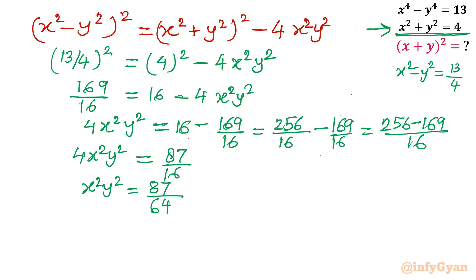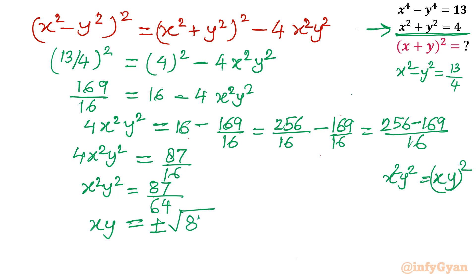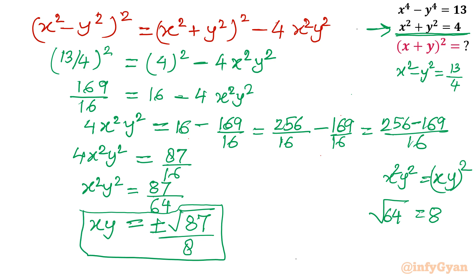Taking square root of both sides — since x²y² can be written as (xy)² — we get xy equals plus or minus square root of 87 over 8, because the square root of 64 is 8. This is our equation number 4: xy equals ±√87/8.